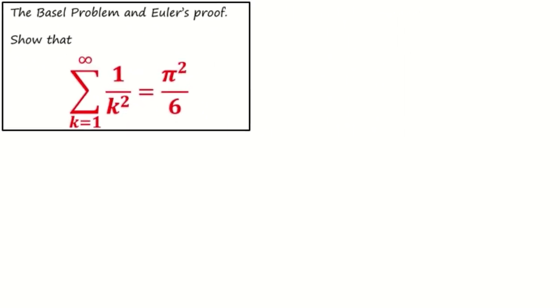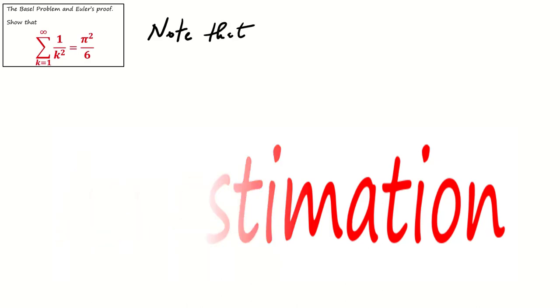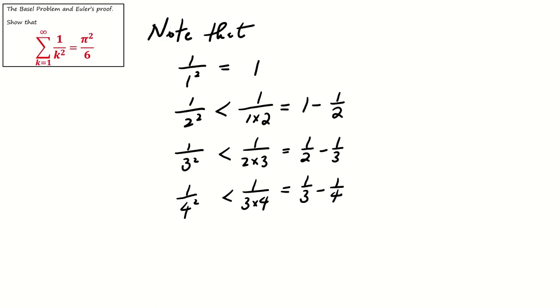Before we go to the proof by Euler, we try to get an estimation of this summation. Note that 1 over 1 squared equals 1. 1 over 2 squared is less than 1 over 1 times 2, which is 1 minus 1 over 2. 1 over 3 squared is less than 1 over 2 times 3, which is 1 over 2 minus 1 over 3. And 1 over 4 squared is less than 1 over 3 times 4, which equals 1 over 3 minus 1 over 4.